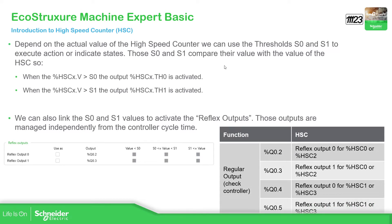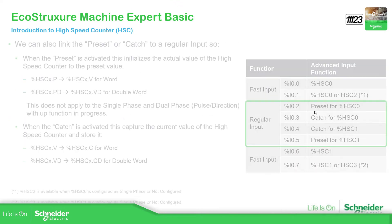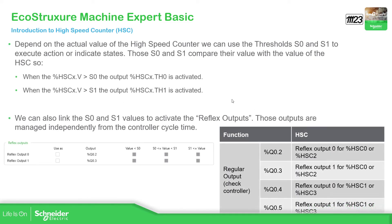Once you have configured the high-speed counter, and decided whether to use the preset and catch, there are some important threshold values you can configure. The threshold can compare the actual value of the counter, and you can execute events and also activate the reflex output. So depending on the actual value on the counter — remember .B is the actual value — you can activate an event or activate the output of the function block.